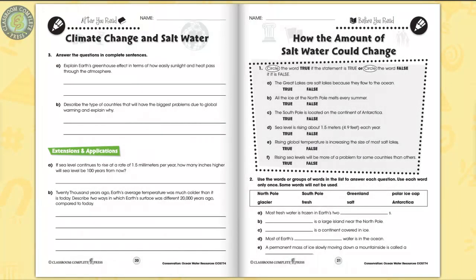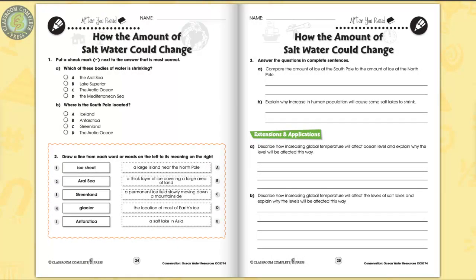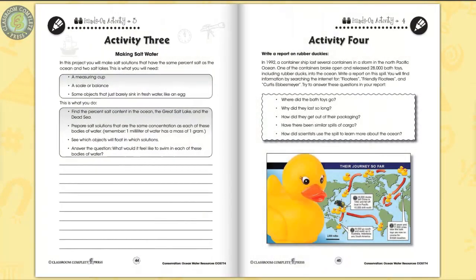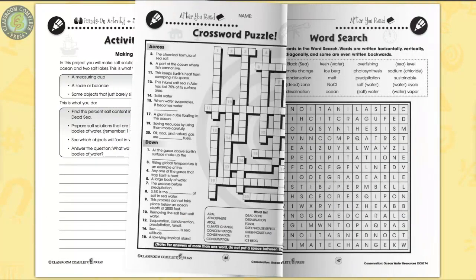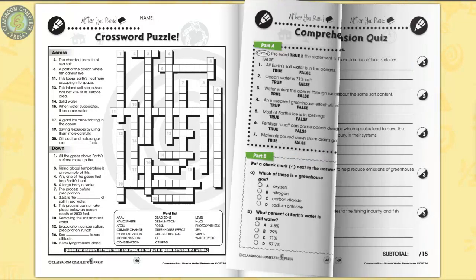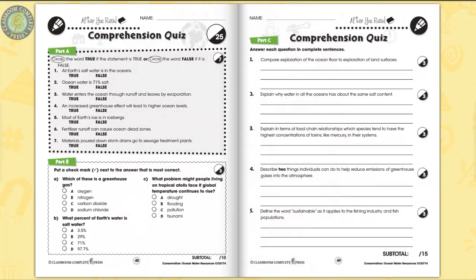The after-you-read sections include short and long questions for comprehension, followed by an extension activity. Explain how an increase in human population can cause some salt lakes to shrink. The hands-on activities are designed to get your students thinking and elaborating on everything they have learned so far. Conduct a case study on a container ship that lost several containers in a storm in the North Pacific Ocean. Differentiated comprehension skills are measured by a crossword and word search puzzle, then a three-part comprehension quiz.